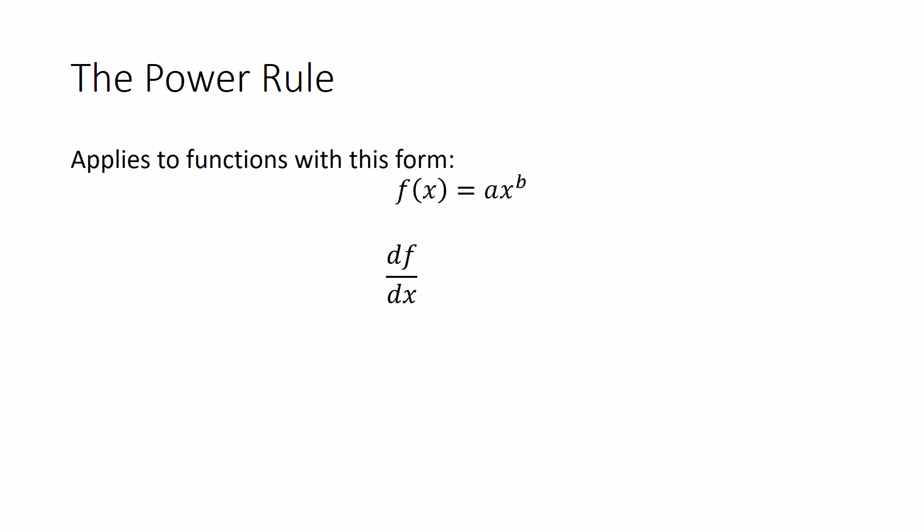So this is the derivative, it reads as df/dx, and df/dx is equal to a times b times x to the b minus one. That equation, the derivative of f, df/dx, tells you how fast f is changing at any level of x. And we did two things to transform it. One, we brought the exponent down and multiplied it by the a, and then two, we subtracted one from the exponent.